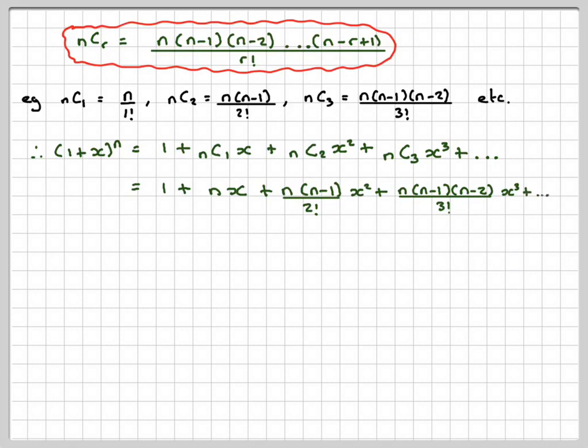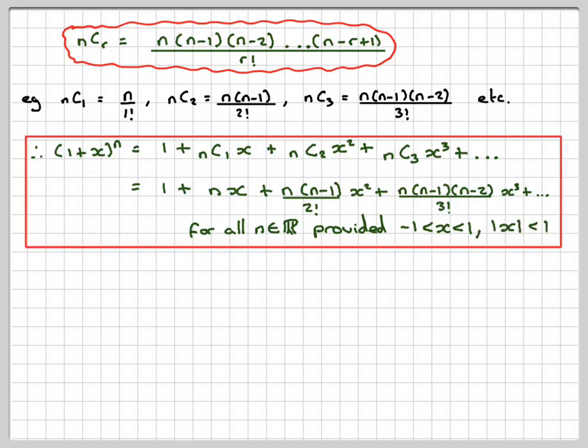But this was for all n belongs to the real numbers. It will work for positive integers, negative integers, and fractional, provided x is between -1 and 1. And remember, it's only an expansion of (1 + x). Sometimes this is written as |x| < 1.